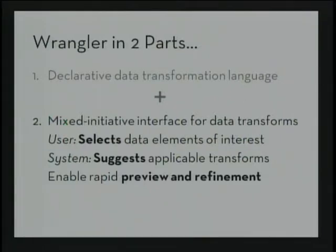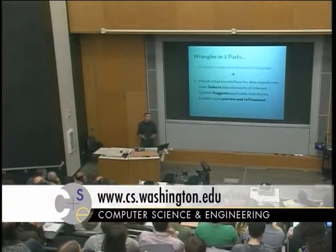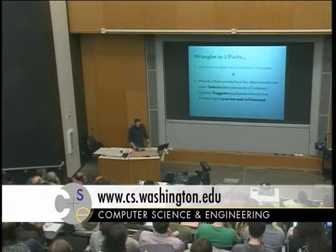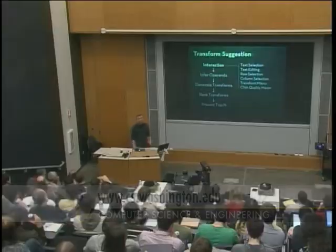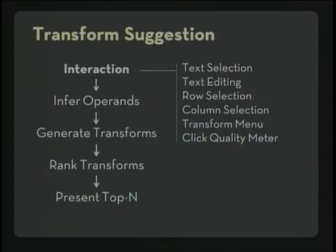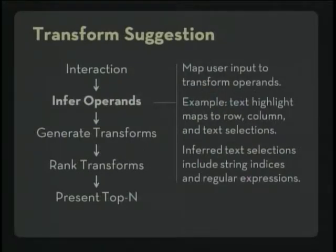On top of the language is a mixed-initiative interface for data transformation. A user selects elements of interest, and in response the system suggests applicable transforms — things that might get data into a more usable state. The dialogue is made rapid by supporting previews and refinements; those visual previews are what users primarily use to navigate the transformation space. The transformation suggestion works as follows: when users interact by selecting text or clicking rows and columns, the system infers operands — parameters for operators in the declarative language — including text highlights mapped to row, column, and text selections, as well as simple inferences and more complex regular expression inference.